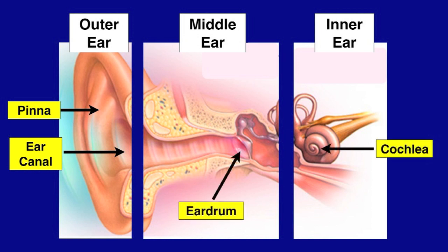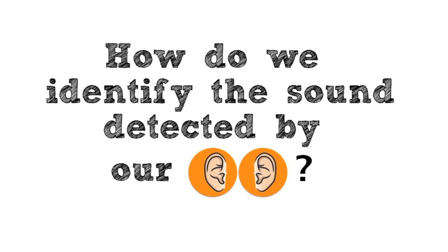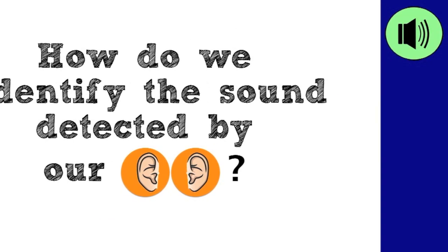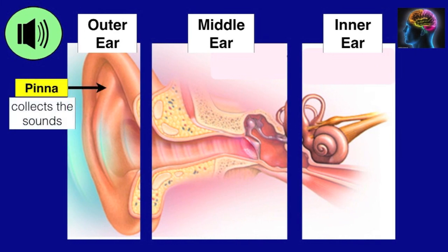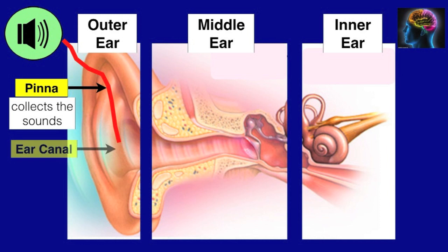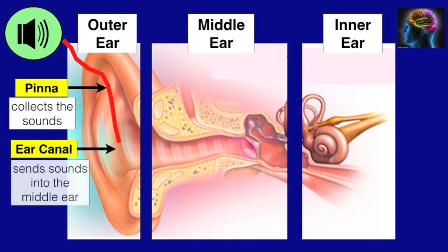The inner ear is made up of the cochlea and the auditory nerve. How do we identify the sound detected by our ears? The outer part of the ear, which is the pinna, collects sounds from the environment. The sound is then sent to the ear canal, which sends it into the middle ear — the eardrum.